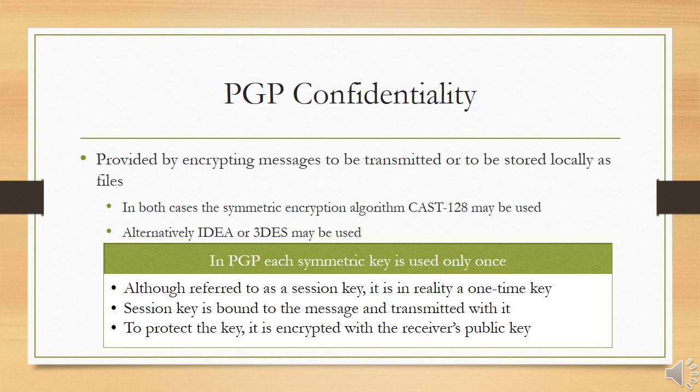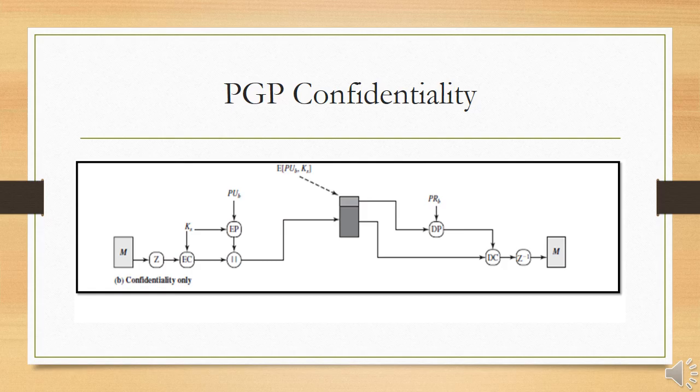PGP confidentiality is provided by encrypting messages to be transmitted or stored locally as files. The symmetric encryption algorithm CAST-128 may be used; alternatively, IDEA or Triple-DES may be used in PGP. Each symmetric key is used only once — it is referred to as a session key but is in reality a one-time key. The session key is bound to the message and transmitted with it. To protect the key, it is encrypted with the receiver's public key so that only the authenticated receiver can decrypt it, as only they hold their private key.